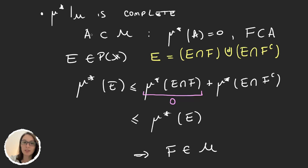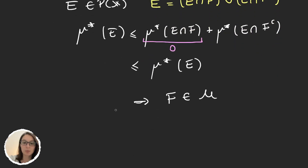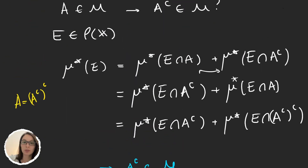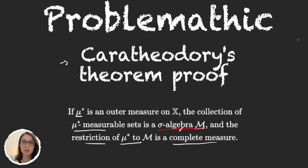To summarize: we grabbed an element in the sigma algebra that measured zero, took a subset F of that set A, and proved that the subset was also an element in the sigma algebra. So μ* restricted to M is a complete measure. This theorem is amazing because it tells us that from an outer measure, we are able to get a sigma algebra, and the restriction of the outer measure to the sigma algebra is a complete measure — not just a measure, but a complete measure.